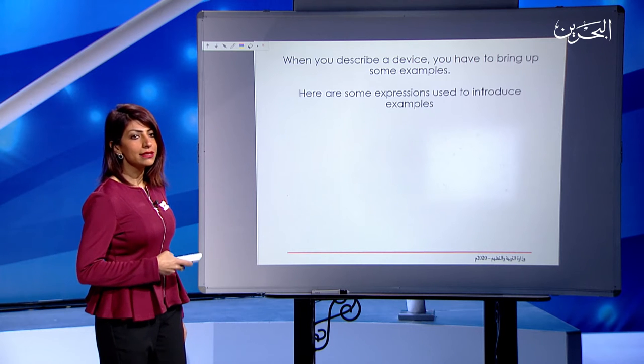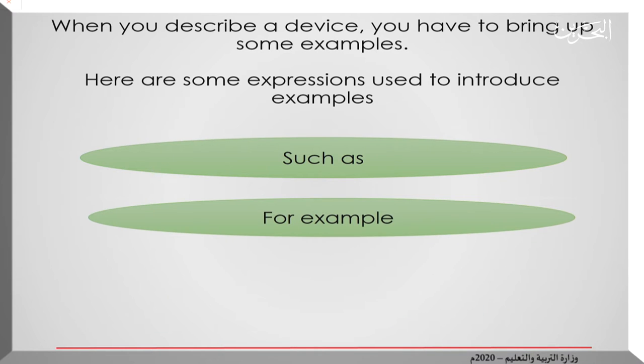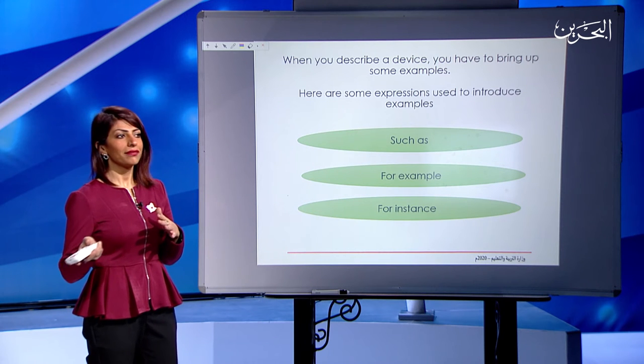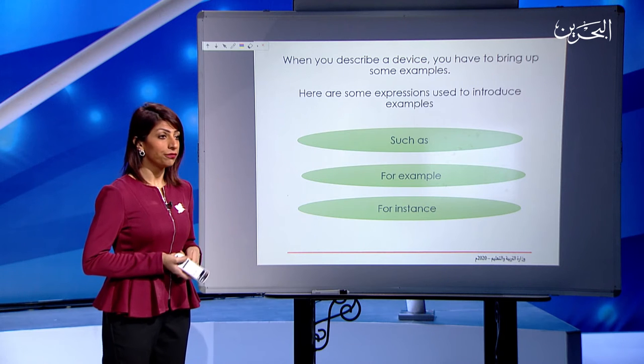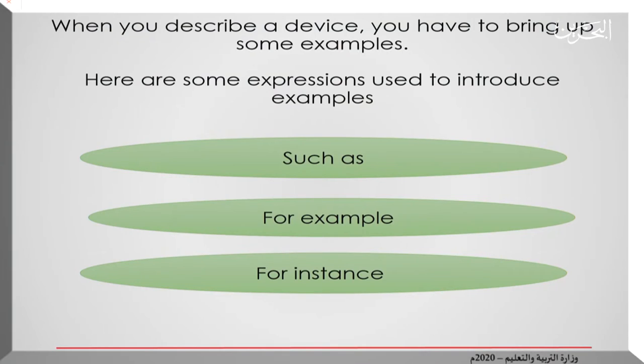So here are some expressions used to introduce examples. Let's see them together. Such as, followed by the example that you would like to mention. For example, and of course this is the most common expression in giving examples, even in your daily, everyday life. Moreover, we have for instance—this is a bit formal or it's mostly used in written work. If you want to bring up any example, you say for instance. Let me put it in a sentence: I like to drink many types of coffees, for instance, Turkish coffee, Arabic coffee. This is the way you should use it. Last but not least, like, and this is very easy and we use it every day. I like to play sports like, and then you mention the examples.